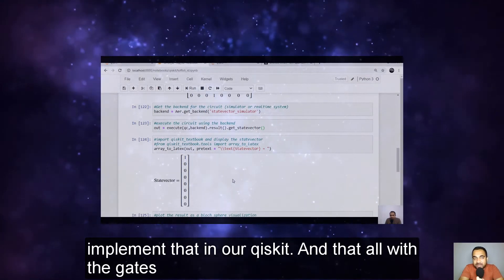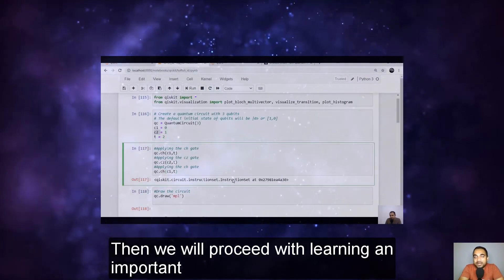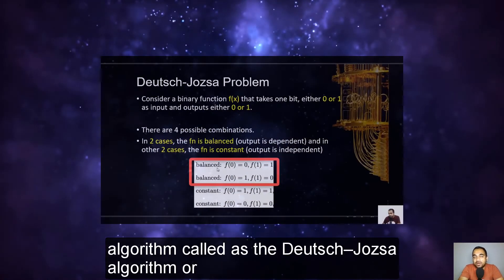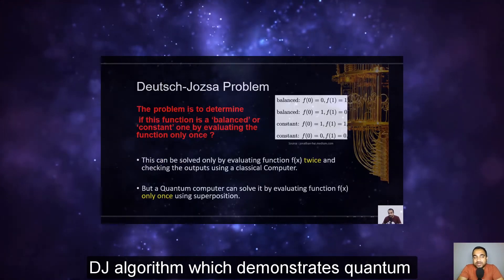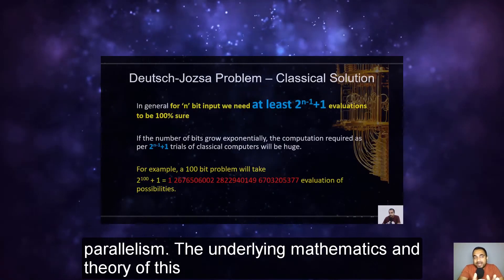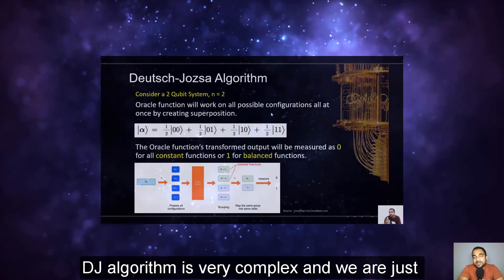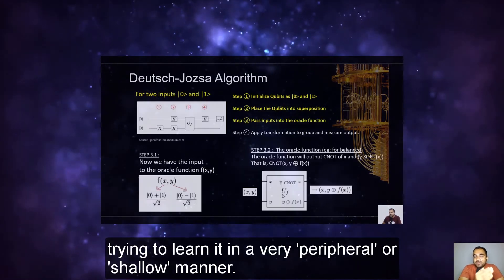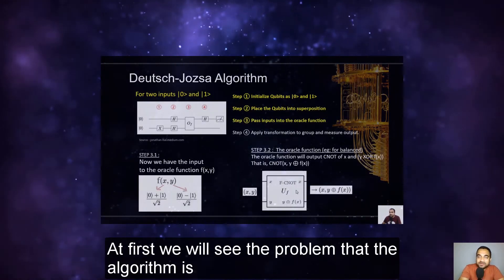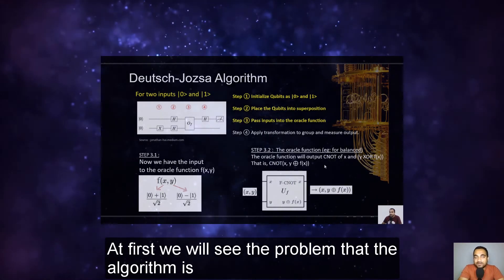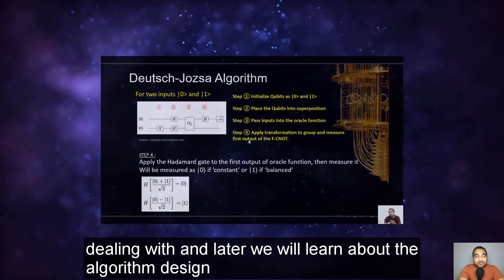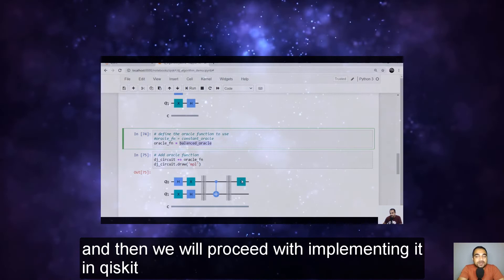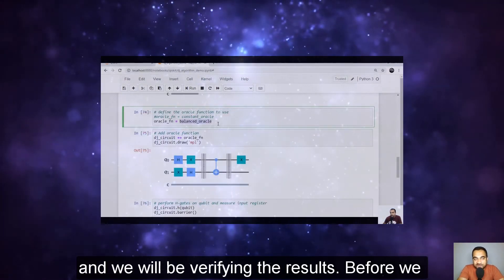And that's all with the gates. Then we will proceed with learning an important algorithm called the Deutsch-Josza algorithm or DJ algorithm, which demonstrates quantum parallelism. The underlying mathematics and theory of this DJ algorithm is very complex and we are just trying to learn it in a very peripheral or shallow manner. At first we will see the problem that the algorithm is dealing with, and later we will learn about the algorithm design, and then we will proceed with implementing it in Qiskit and we will be verifying the results.